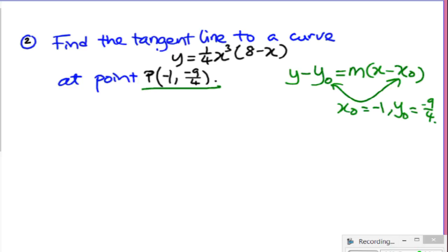What we are missing at the moment is m, but luckily, as we've seen before, m here is just the derivative of y evaluated at x0, which in this case is negative 1.